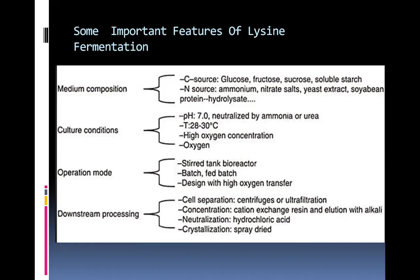For the production of lysine, the organism usually prefers a pH of around 7, which is neutralized by ammonia or urea addition, and a temperature of around 28 to 30 degrees centigrade.